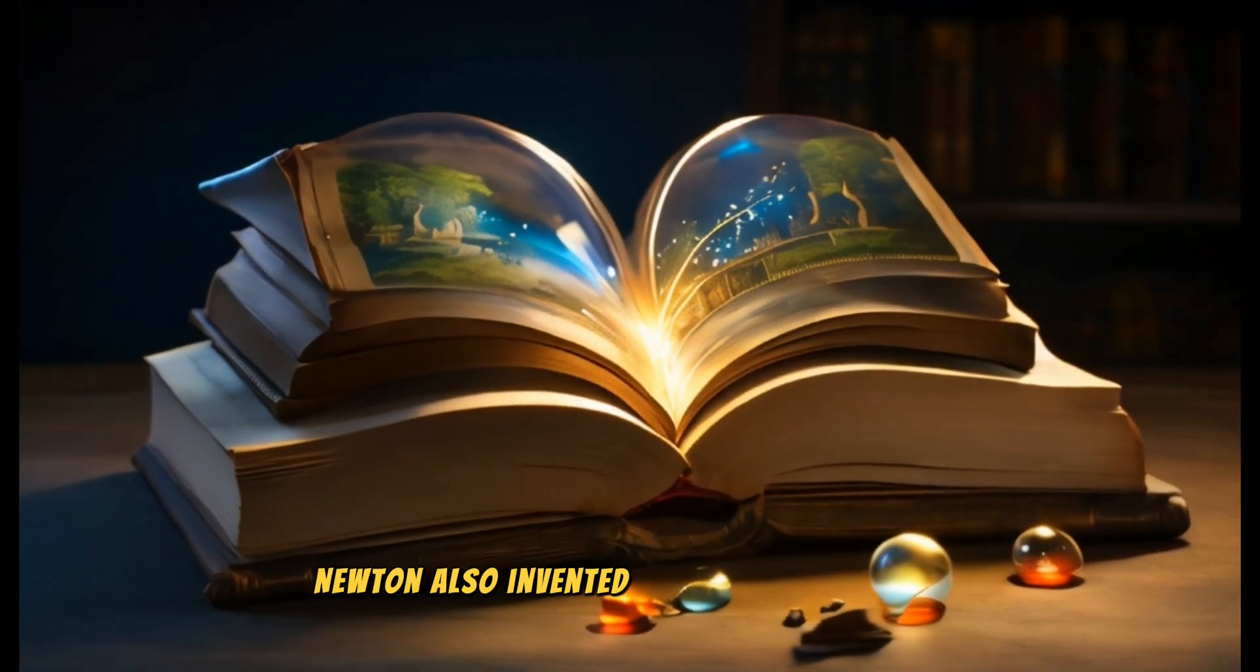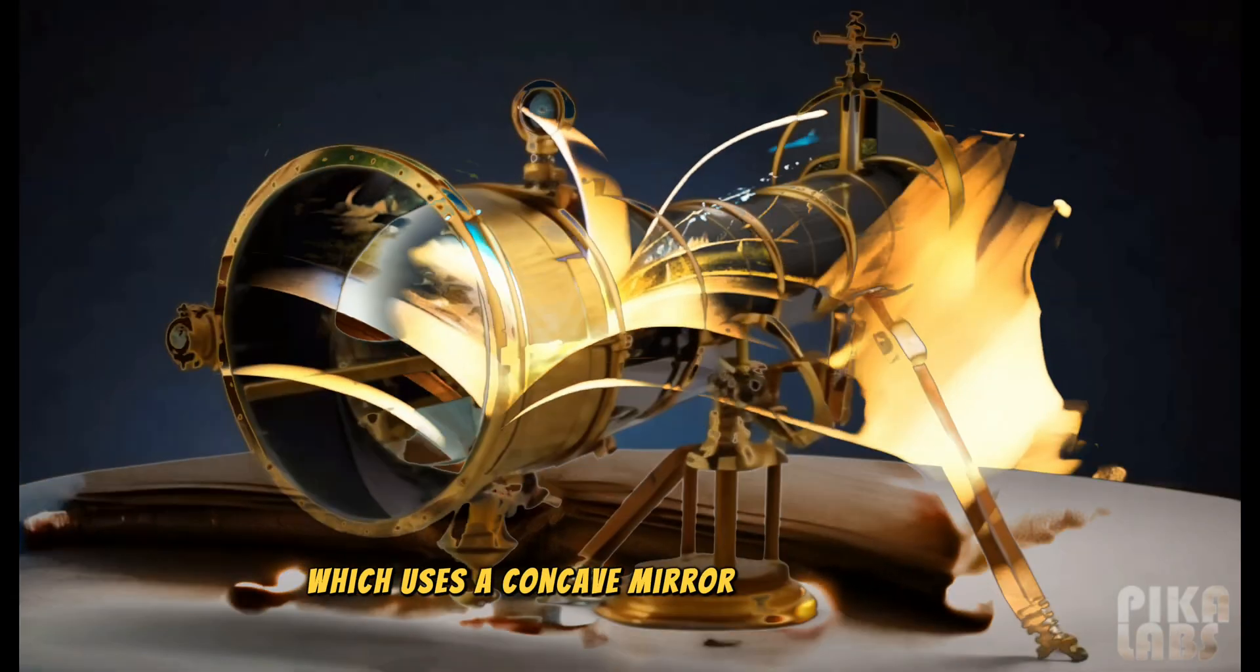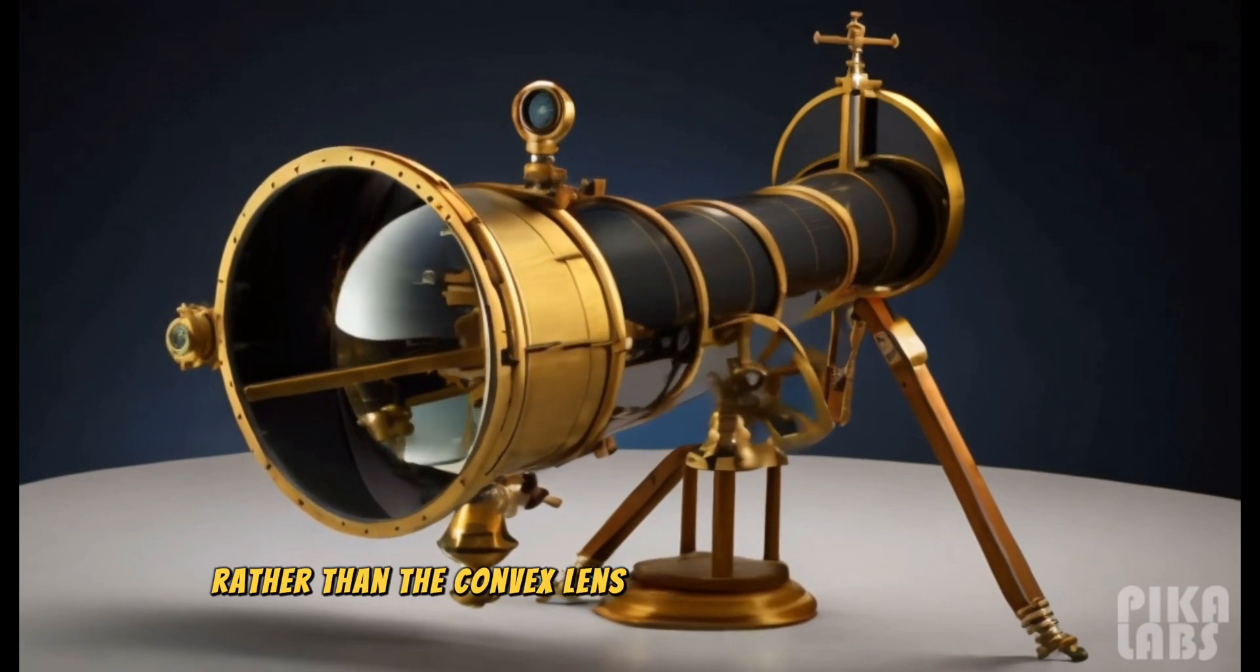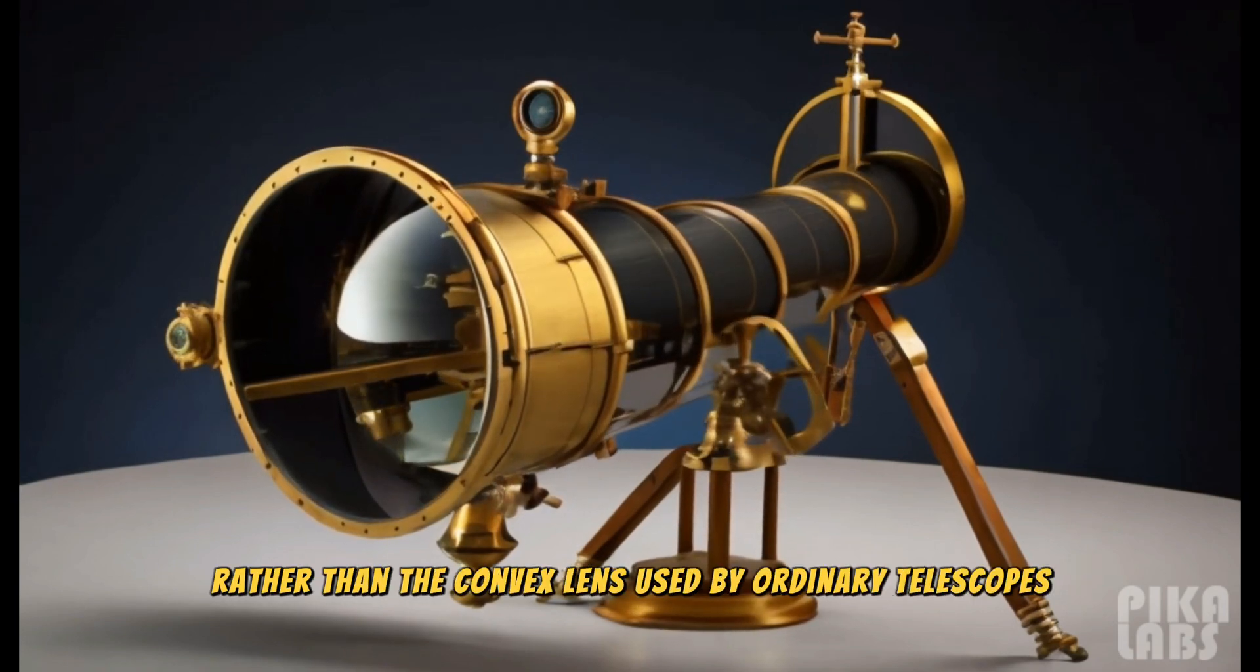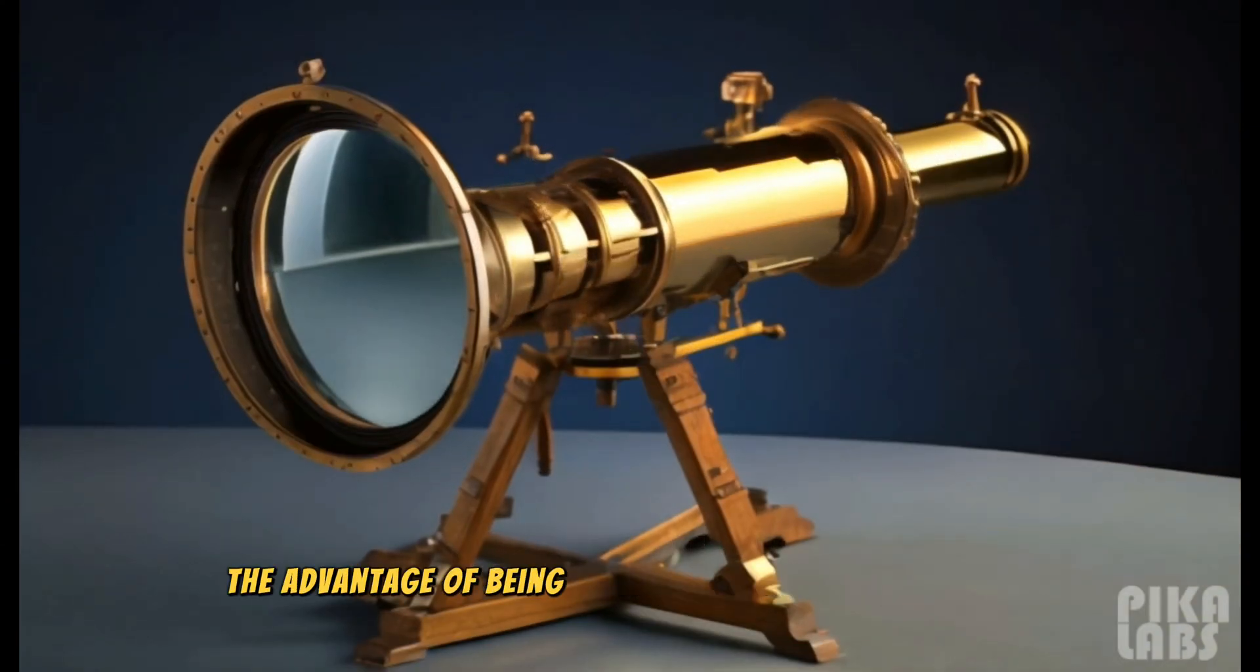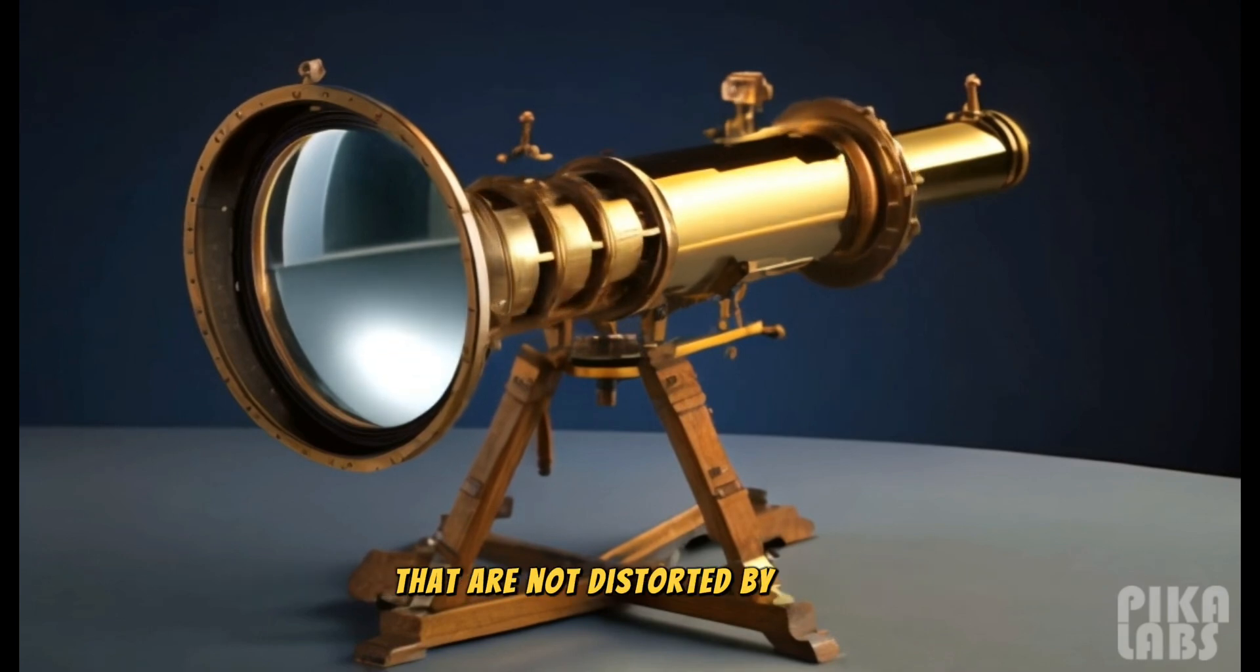Newton also invented the mirror telescope, which uses a concave mirror to focus light, rather than the convex lens used by ordinary telescopes. The mirror telescope has the advantage of producing clearer images that are not distorted by color.